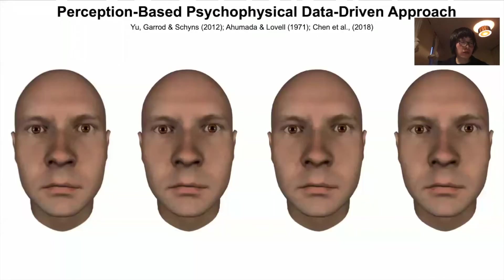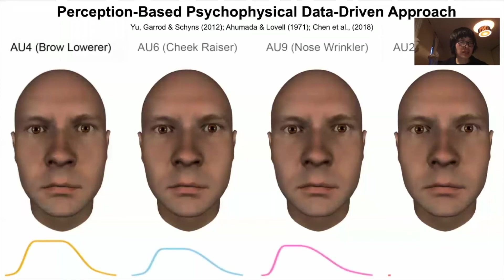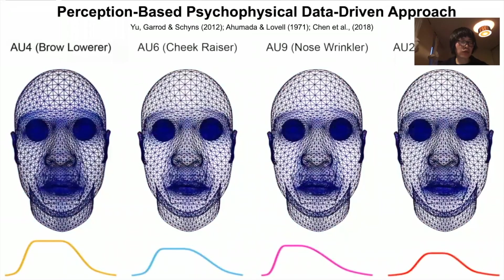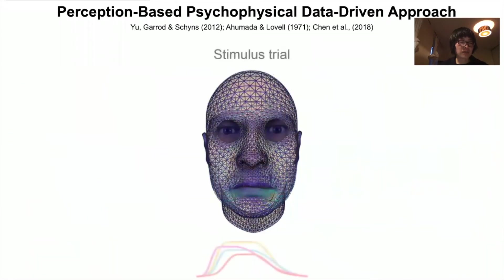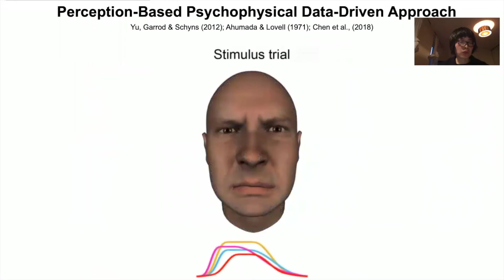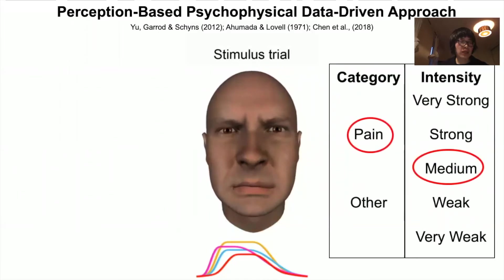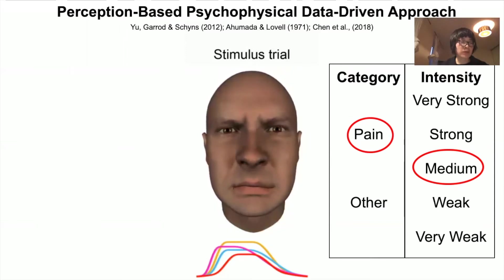On each trial, a face movement generator randomly samples and dynamically generates a subset of action units and combines them to create a random facial animation. The participant categorized the facial animation as representing pain or not and rated its intensity. Therefore, on each trial, we can agnostically capture the dynamic facial movements that represent pain to an individual.